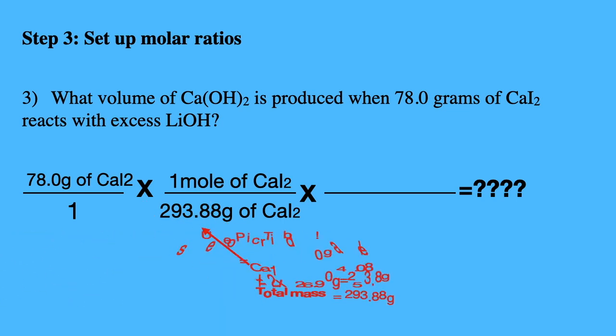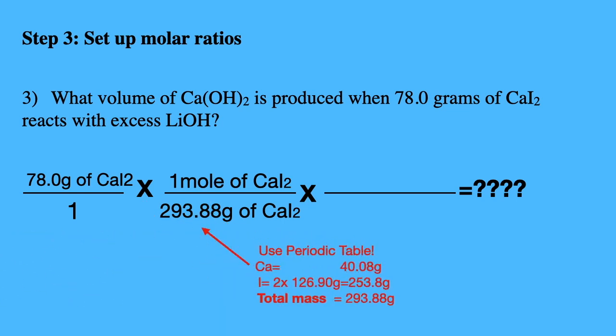Where did I get that mass? You use your periodic table. Calcium equals 40.08 grams. Iodine, we have 2 of them, so we have to do 2 times 126.90 grams equals 253.8. And the total mass is 293.88 grams.